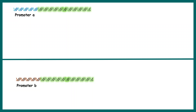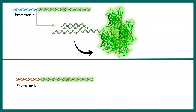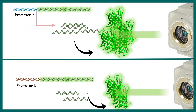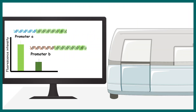For example, we have two promoters — promoter A and promoter B. With promoter A, we see a higher amount of transcription, while with promoter B we see less transcription. By detecting and comparing the fluorescence intensity, we can determine that promoter A is much stronger than promoter B.